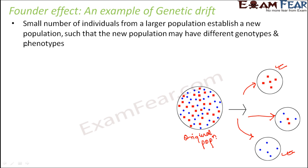Why do we call this the founder effect? In the founder effect, we talk about founder mutations, which refers to mutations that appear in the DNA of individuals who are founders of a specific population. Some mutations would have happened in these founders, causing changes in the DNA of individuals, and that's how they segregated into new smaller populations with different genotypes and phenotypes.